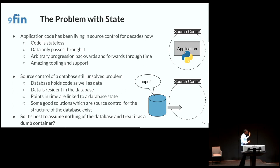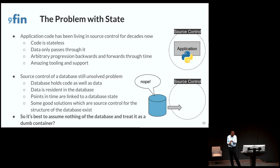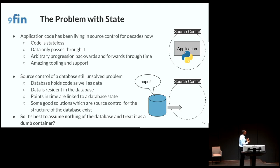Coming to databases — I think in my view it's still an unsolved problem. How do we bring source control, or the concepts of source control, into the world of databases? Because databases hold the code as well as the data. The data is resident in that database, and points in time are actually tied to the particular state of the data at any one point. Trying to go backwards and forwards, you need to do it in a way that is unaffected by the data, and once you pass a certain point, you can no longer go backwards. There are some good tools for managing the structure of the data — the metadata describing the structure — but we're still figuring out how to do that for the data inside it.